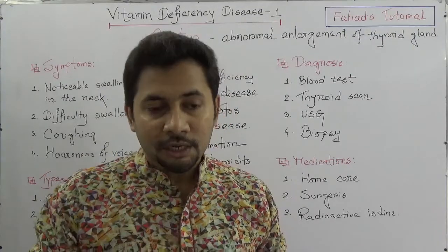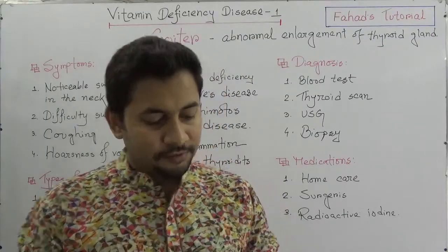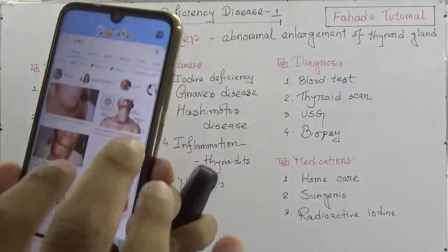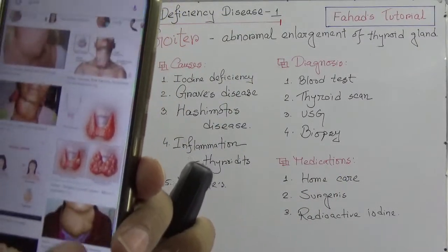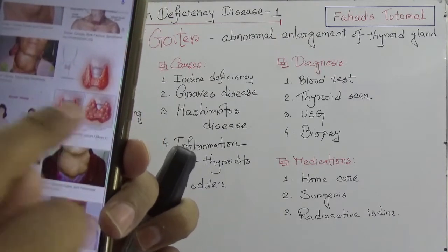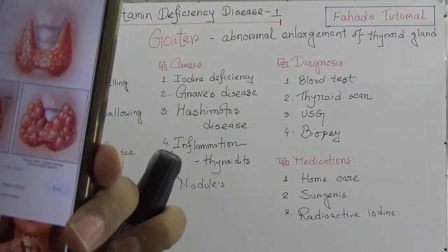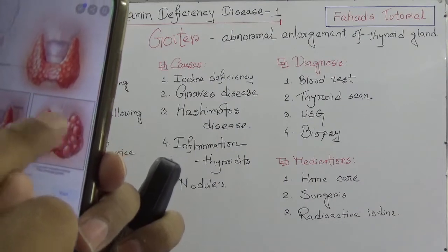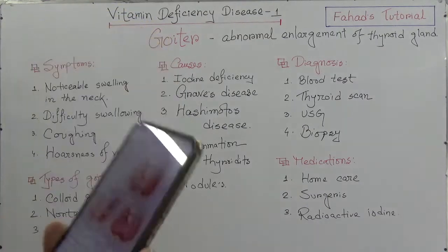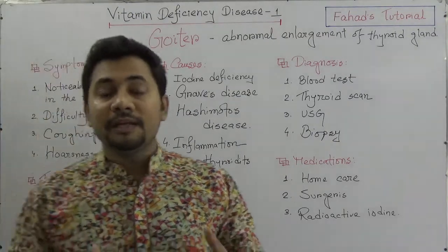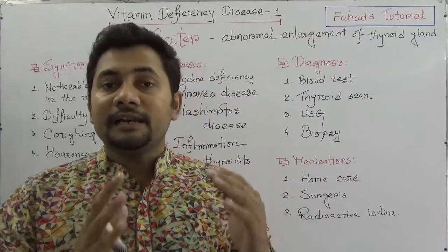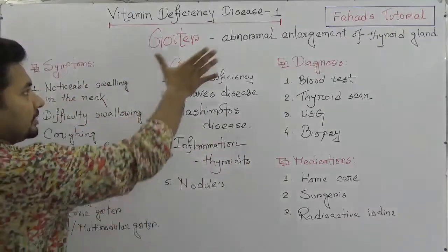The function of the thyroid gland is to produce hormones which are essential for metabolism. Regarding goiter, you can see images of a patient with goiter where nodules are observed — a single nodule forming, or the thyroid with multiple nodules. The normal thyroid gland is located just under the Adam's apple and looks like a butterfly shape. When an abnormal enlargement happens, that is known as goiter.